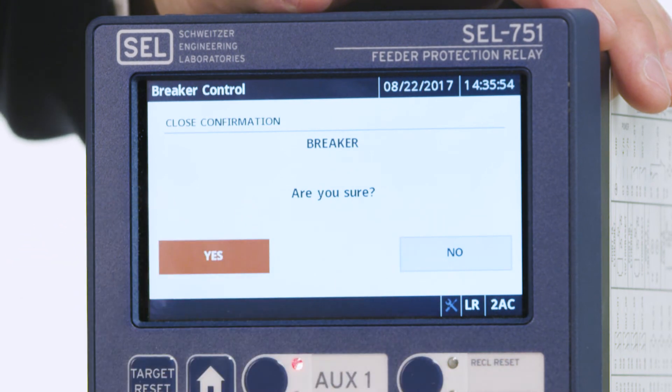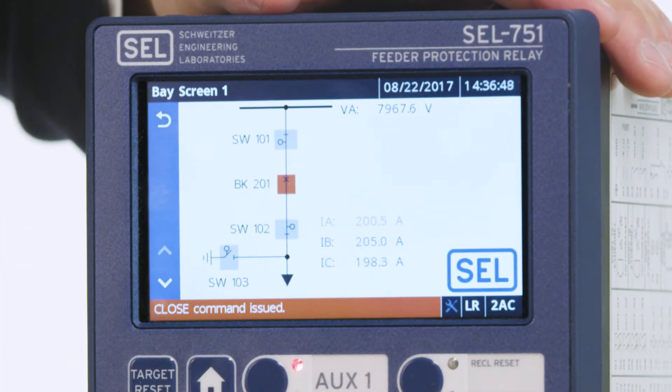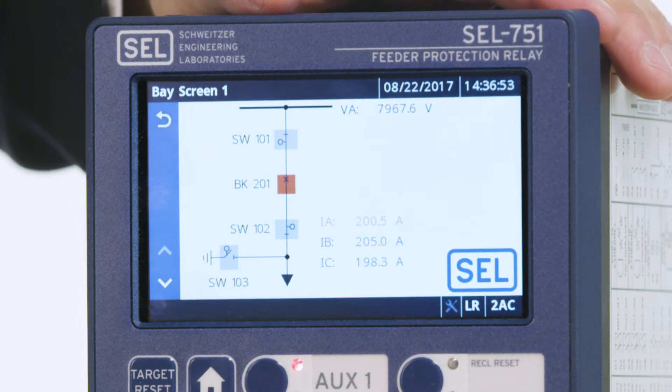Next, we are prompted to make sure that we want to close the breaker. And yes, we do. As you can see, the one-line diagram has been updated showing the breaker in a closed state.